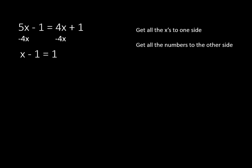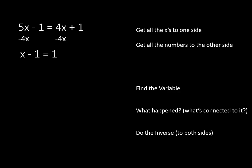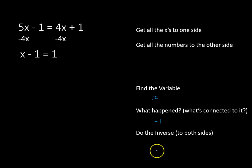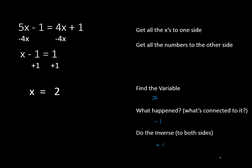On the left side now I have x minus 1. On the right side, all I'm left with is 1, because 4x minus 4x gets rid of it. Now I'm going to get all the numbers over from the left side to the right side. I subtracted 1 from x, so I'm going to do the inverse — adding 1 to both sides. x minus 1 plus 1 gets rid of the numbers on the left side, leaving us with only numbers on the right side. Our equation is solved: x is equal to 2.